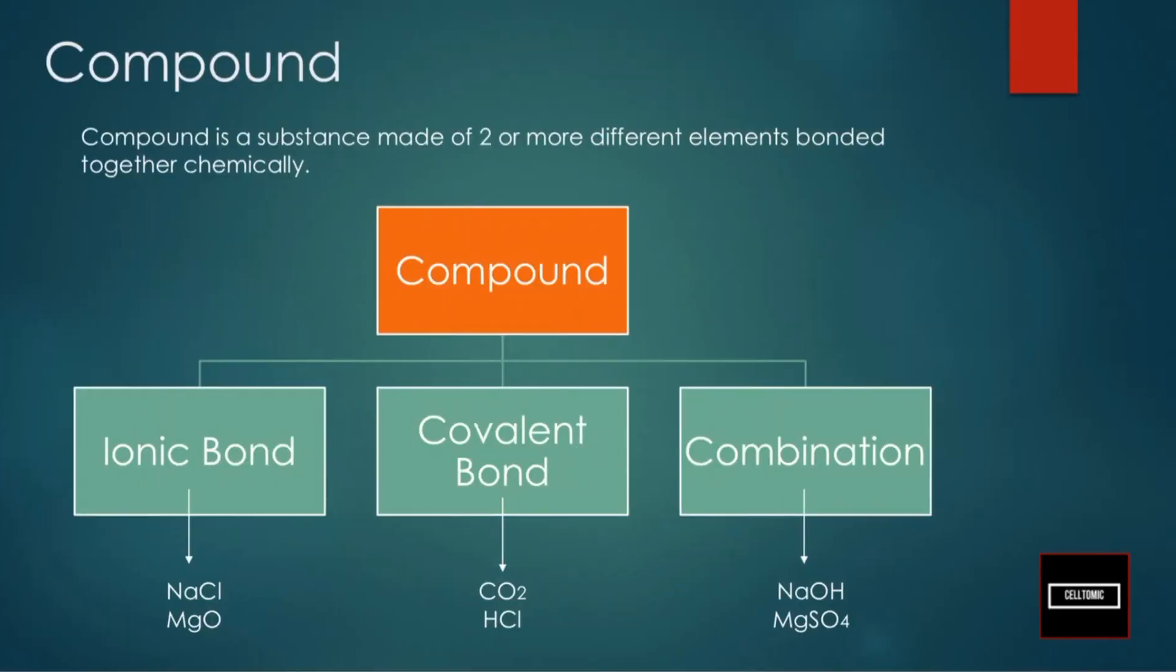So a compound is a substance made of two or more different elements bonded together chemically. And these elements are bonded in three ways. The first, ionic bonding, second, covalent bonding, and third, a combination of both ionic and covalent bonding.